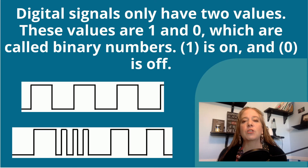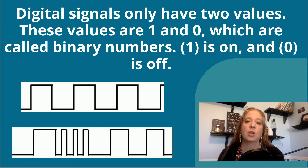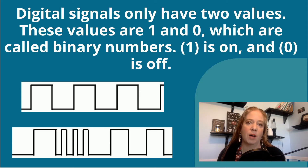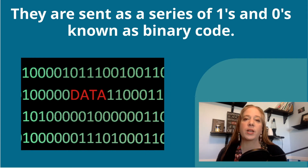Digital signals only have two values. These values are 1 and 0, which are called binary numbers. 1 is on and 0 is off. They are sent as a series of 1s and 0s known as binary code.